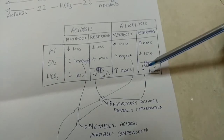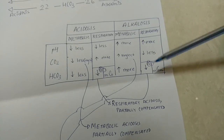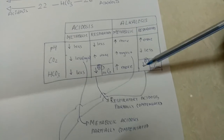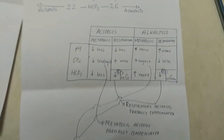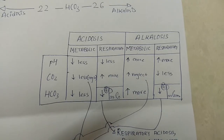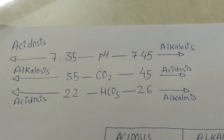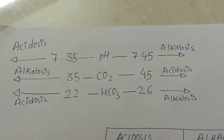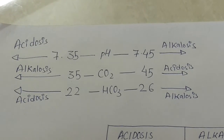If the metabolic factor is also lesser compared to the normal value, it may be the same value or if it is less, it will be called respiratory alkalosis, partially compensated. This is how, from the ABG pH values, we can determine whether there is acidosis or alkalosis and identify the type.